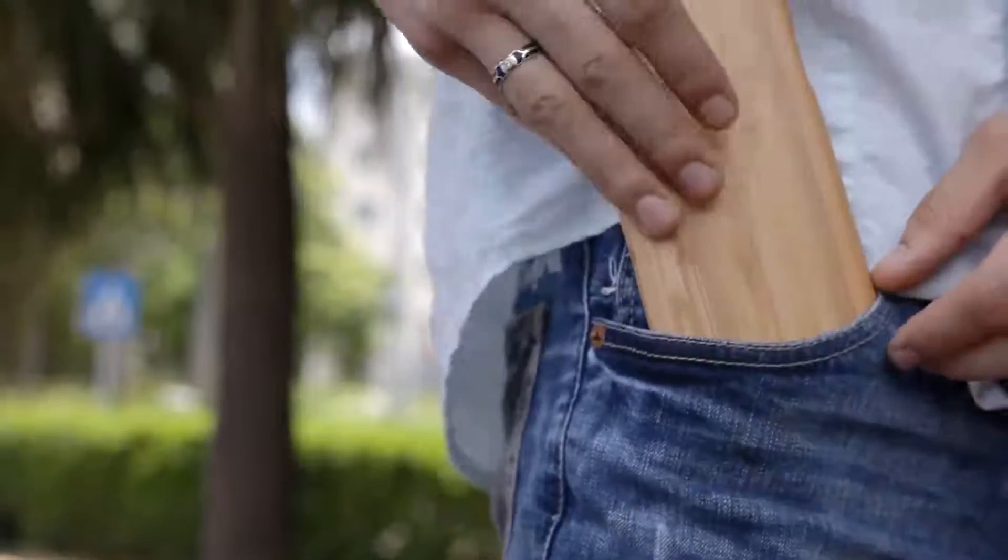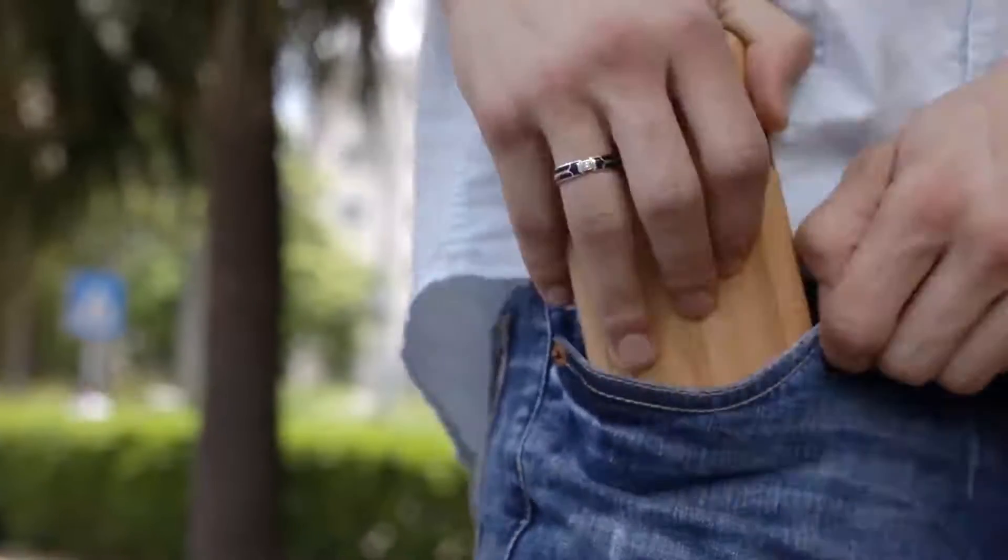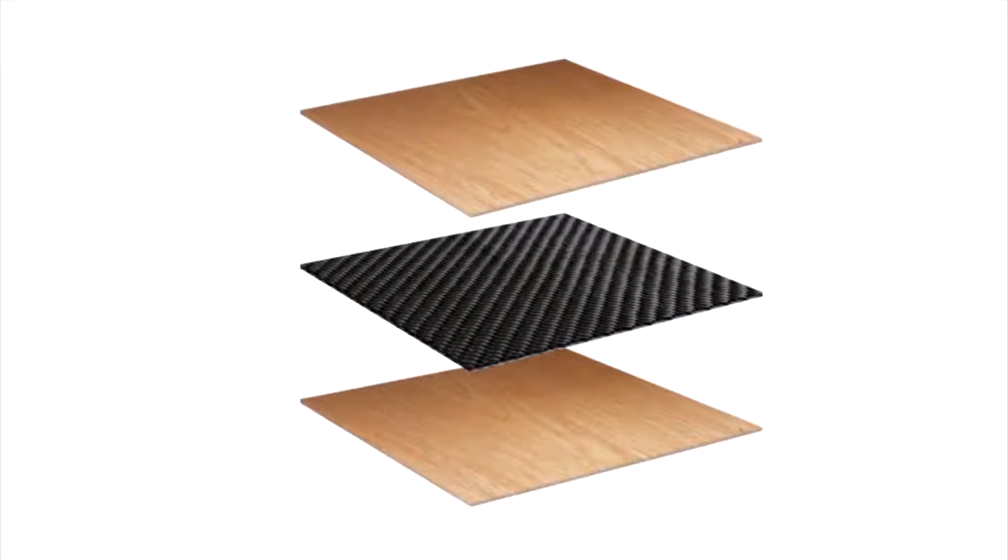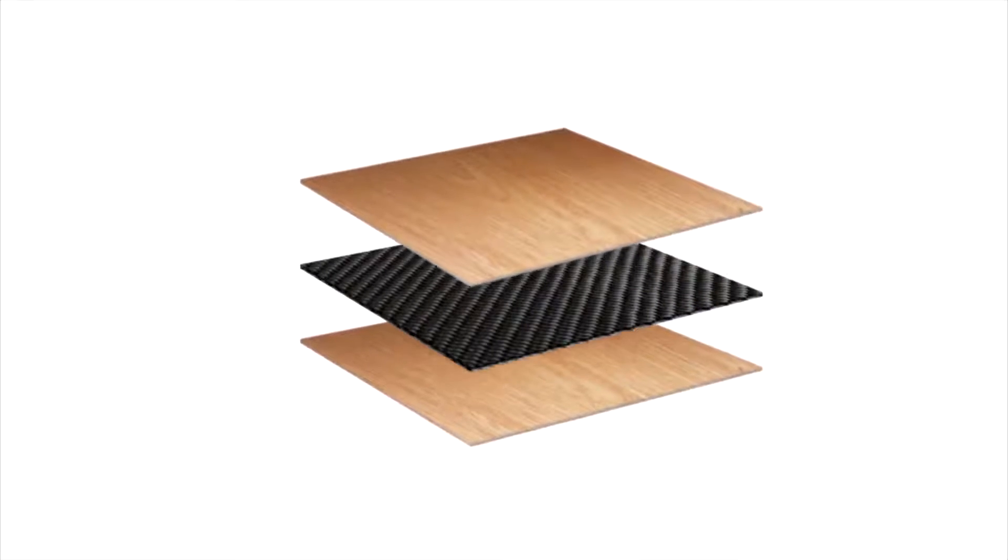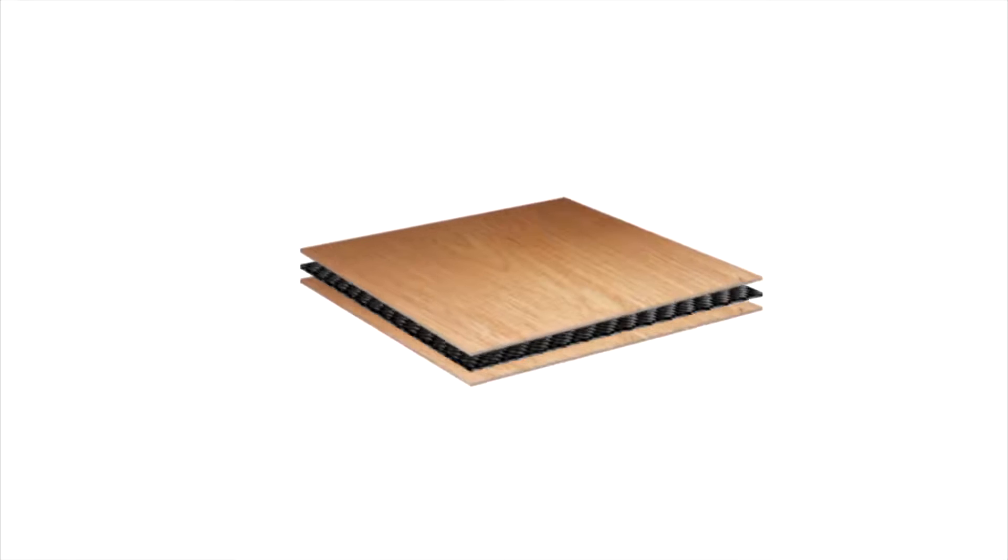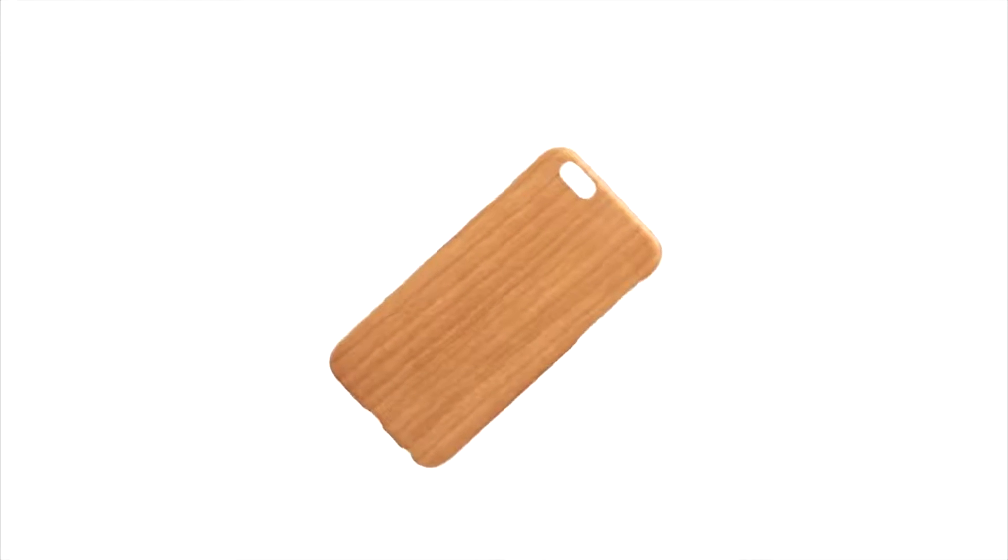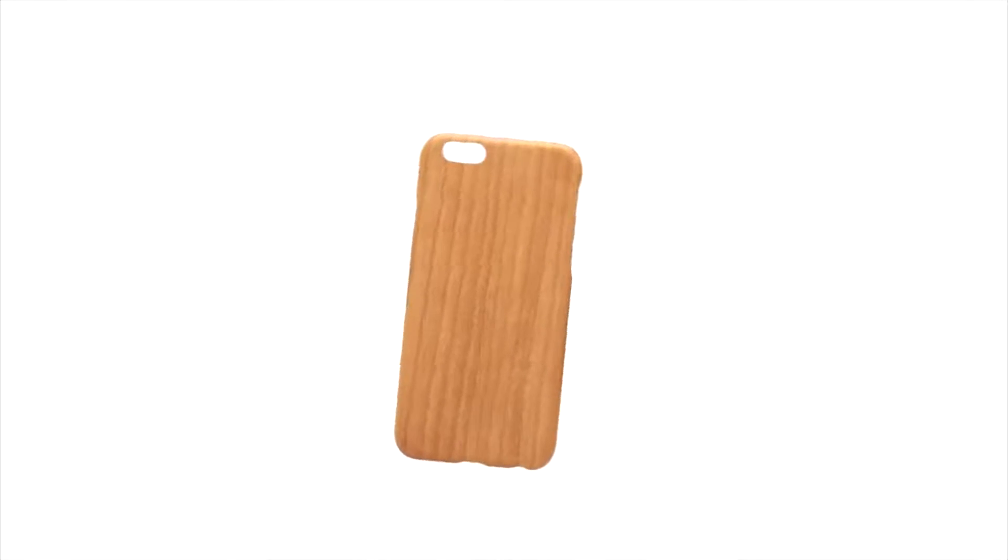With this technology, we can make unique phone cases by blending other materials with the Oramacore fiber. We put a layer of the Oramacore fiber in between wood veneer, kind of like a sandwich, and then vacuum form it and put it in an oven. Oramacore wood phone case is ready.